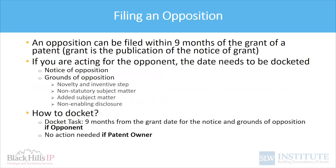The opposition, if it's going to be filed, has to be filed within nine months of the grant of the patent — specifically the publication of the notice of grant. If you are the patent owner, you'll be monitoring this period. If you're the opposer and planning to oppose another party's granted patent, you'll open a separate matter in your system and monitor prosecution of that European application, docketing your nine-month deadline to oppose once it's near grant.